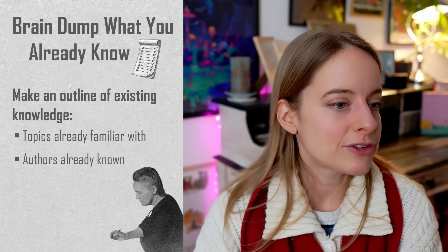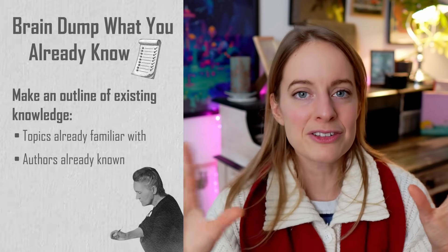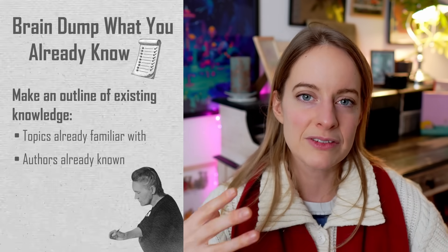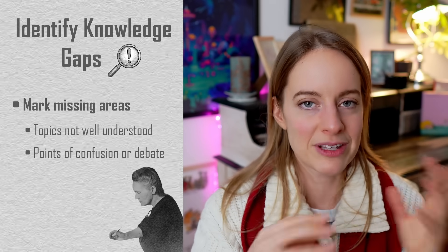When I start a mini learning project, the first thing I do is make an outline of all the topics I already know about. For example, within schizophrenia and psychosis, I wrote down everything I already imagined was being done in the field and the authors I already knew. If you're very new to a topic you might only have a few bullet points, and that's fine. But if you know a bit more, this brain dump helps you clearly mark where the missing areas or points of contention are.